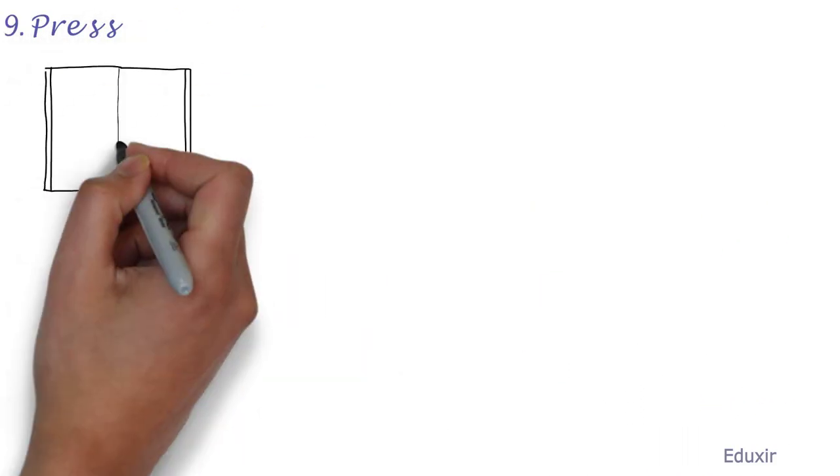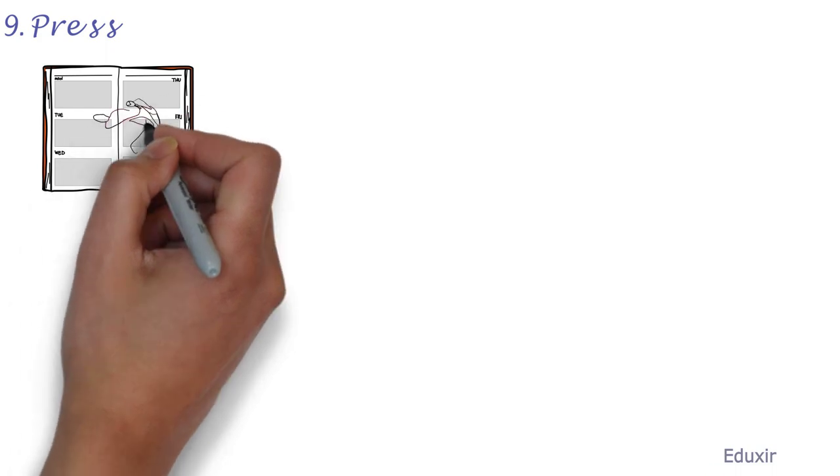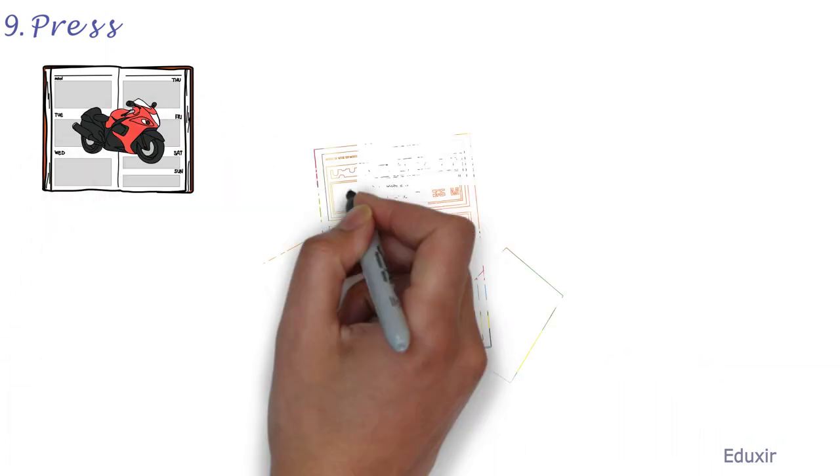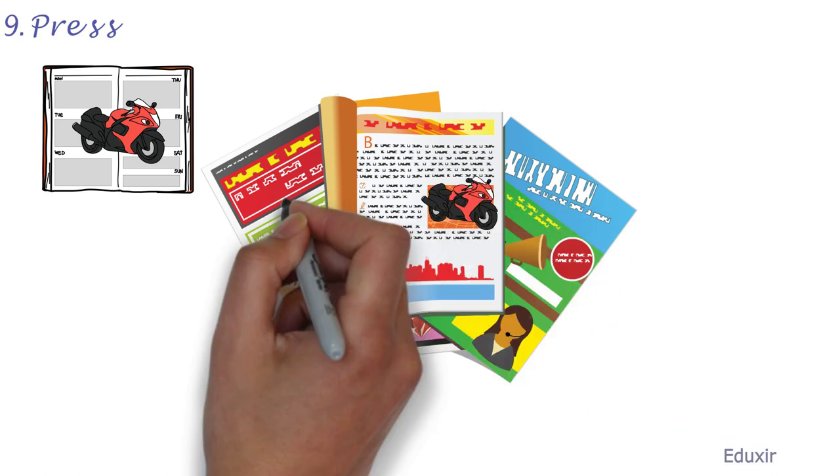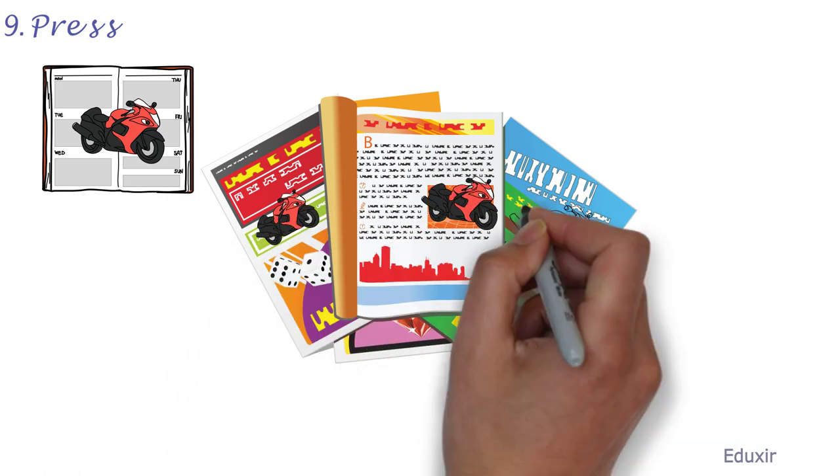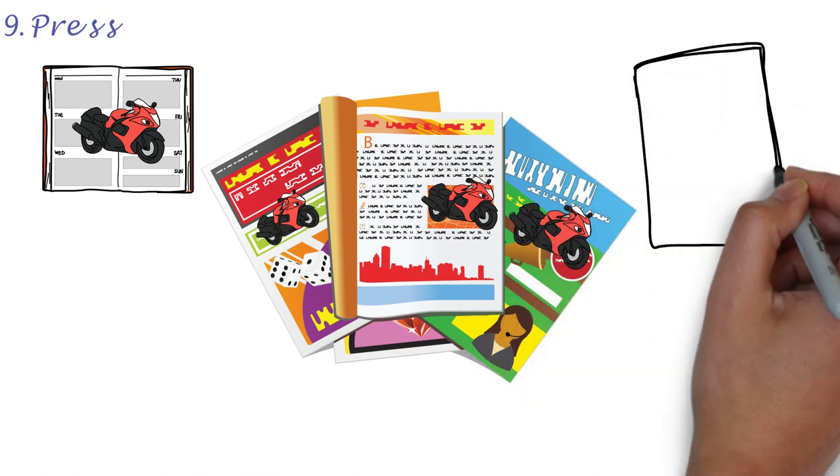The ninth form of media option is Press. Ads are displayed in the journals, magazines, and newspapers.